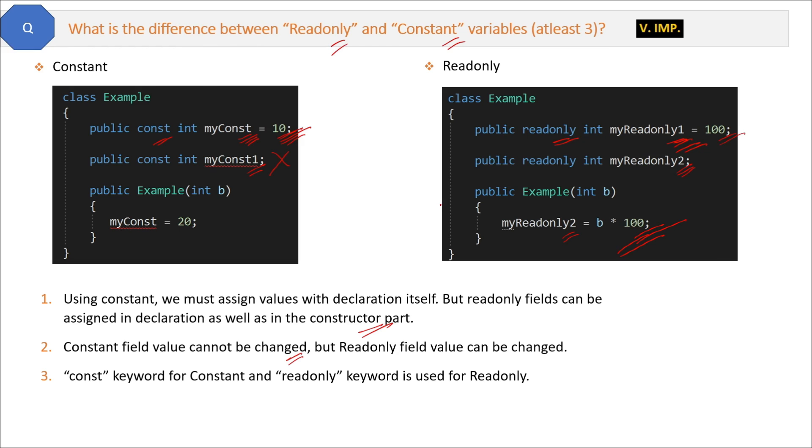Now the last difference is: constant is a compile-time constant and readonly is a runtime constant. The reason is because while compiling or building the program, the compiler knows and confirms the value of constant field. Because when you build the program, the value will be assigned to the constant field.